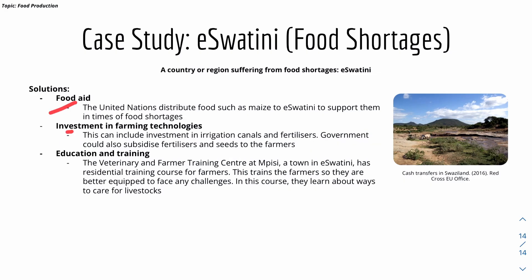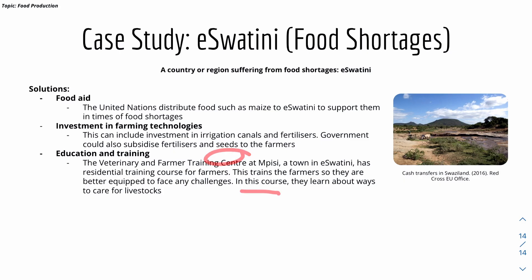Solutions to food shortages in East Eswatini include food aid, where the UN distributes food such as maize to support the country. Investment in farming technologies — such as irrigation canals and fertilizers — helps people grow food. The government could subsidize fertilizer and seeds so farmers can afford them. Education and training at a veterinary and farmer training center provides residential courses to better equip farmers to face challenges and care for livestock.